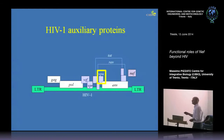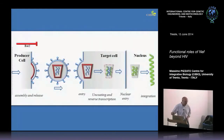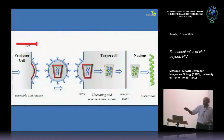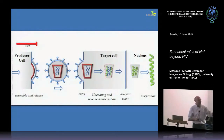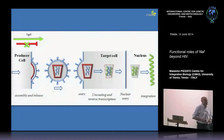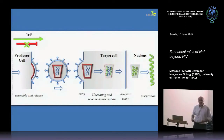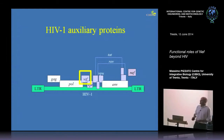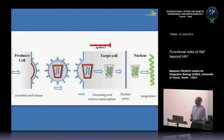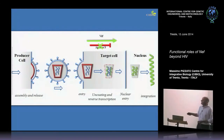A few examples: VPU counteracts a host factor called BST2 which prevents the virus from leaving the cells. BST2 is lacking in many cell types, so if you don't have VPU there you don't see the effect. VIF counteracts a cellular factor called APOBEC3G which interferes with virus replication. APOBEC3G is missing in some cell lines, so if you replicate HIV there you can do it without VIF.